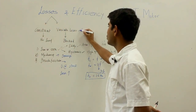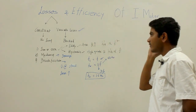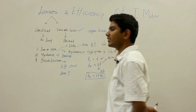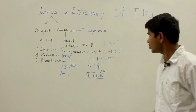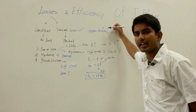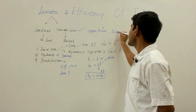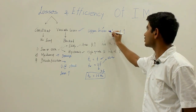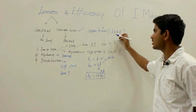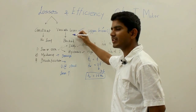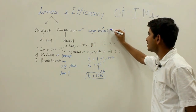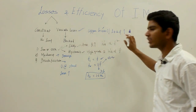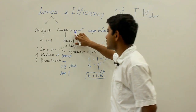Variable losses can also be called copper losses. These losses occur due to the current flowing in the stator winding as well as the rotor winding. As you vary the load connected to the shaft, the current flowing through the stator and rotor windings changes — and since this current keeps varying with the load, these copper losses are referred to as variable losses.